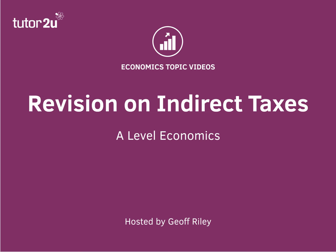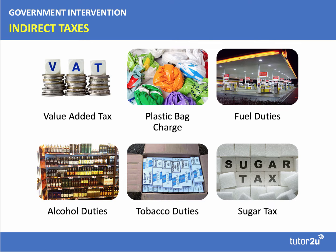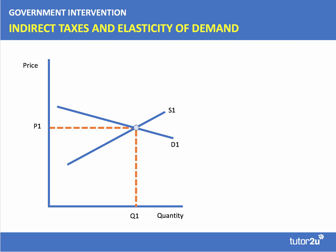Indirect taxes are nearly always in the news in some shape or form — be it proposals to change the rate of VAT, which is currently 20% in the UK, the introduction of a plastic bag charge to address environmental damage, the level of duty paid by car users and the road haulage sector, duties on wines, beers, spirits, and tobacco, and of course the proposal to bring in a sugar tax on high sugar content drinks in 2018.